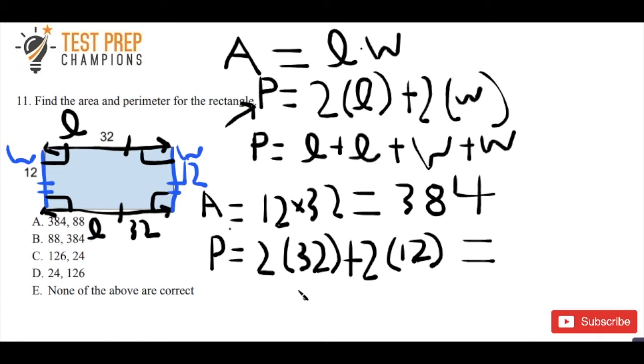In this case, what we have is two times 32 gives us 64, and then plus 24, because two times 12 is 24. That's going to be four plus four is eight, six plus two is eight, so 88. We have an area of 384 and we've got a perimeter of 88. So A is going to be the correct answer. Hopefully this makes sense to you.